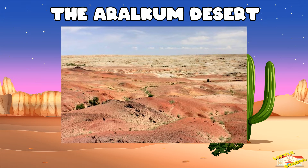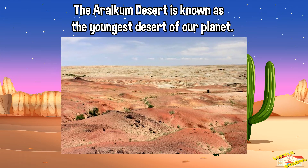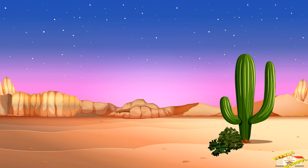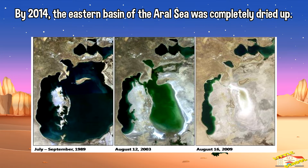The Aral Kum Desert is known as the youngest desert on our planet. It formed in the 1960s when irrigation projects for huge cotton plantations in the area drained the waters from the Aral Lake. By 2014, the eastern basin of the Aral Sea was completely dried up.